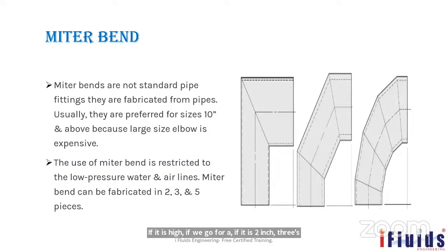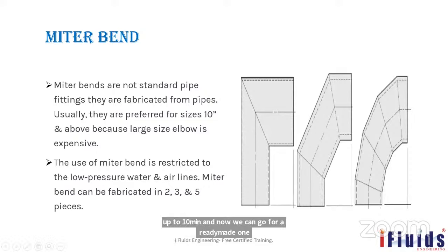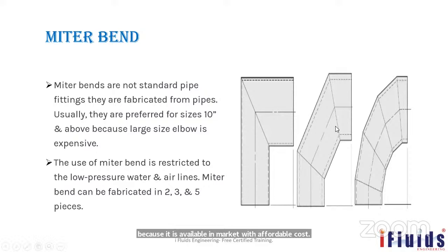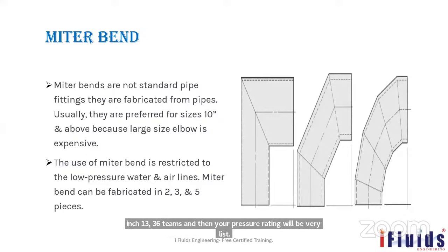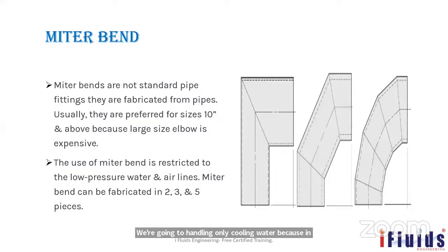Standard elbows are cost-effective and readily available for sizes up to about 10 inches. For large sizes — 600 NB (24 inch), 30 inch, or 36 inch — where the pressure rating is low and the service is, for example, cooling water, a miter bend fabricated on site may be more economical.